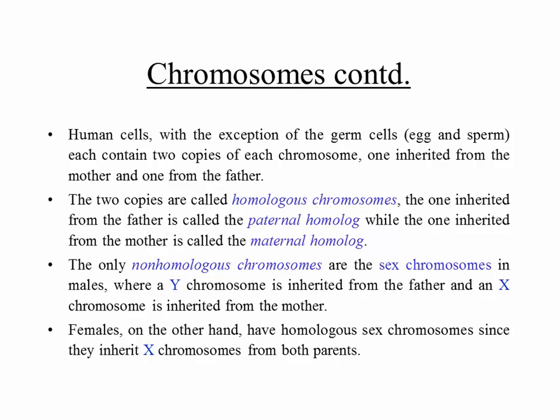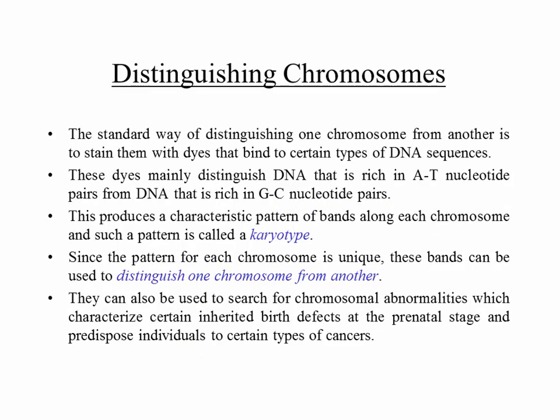How do you distinguish one chromosome under a microscope? You can do staining — dyes that bind to certain types of DNA sequences. Since A pairs with T and G pairs with C, dyes can distinguish DNA rich in AT pairs from DNA rich in GC pairs. This gives a characteristic pattern of bands along each chromosome, and such a pattern is called a karyotype. Since the pattern for each chromosome is unique, these bands can be used to distinguish one chromosome from another.